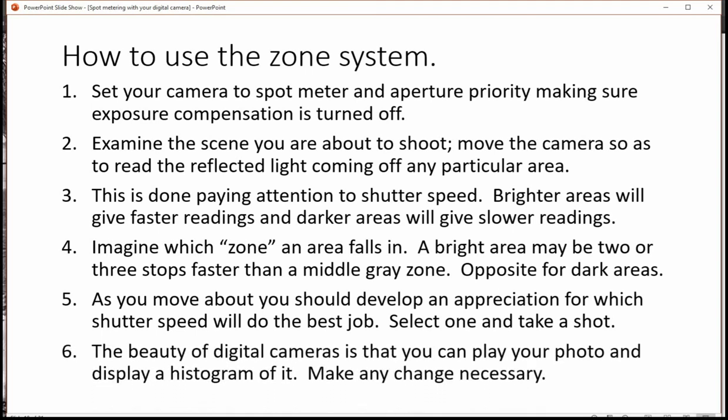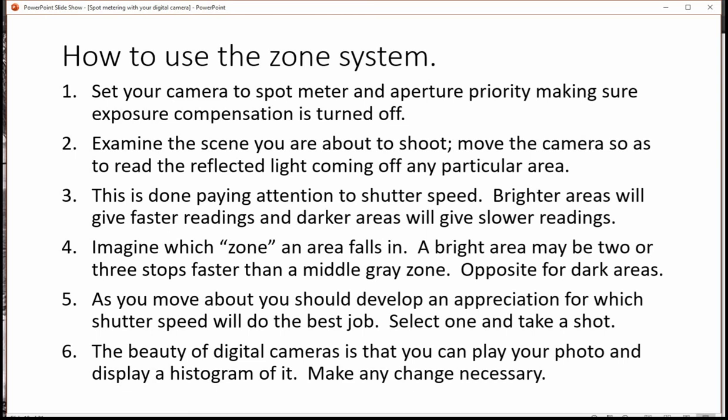Now this is the nice thing about digital cameras is that you can play your photograph and display a histogram of it. Then you go, my shutter speed was too high or my shutter speed was too low. Make the necessary change, take another picture and do yourself a favor. Think about what is going on with the shutter speed that you picked and the way those different zones turned out and that will really help you understand what's going on with the zone system.